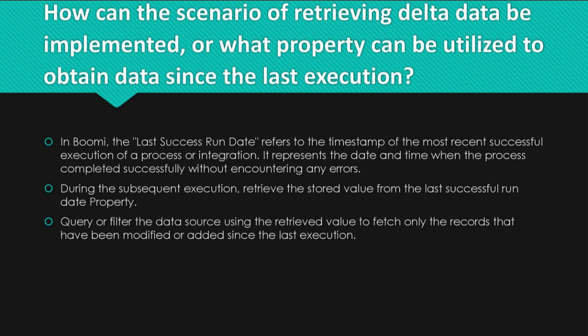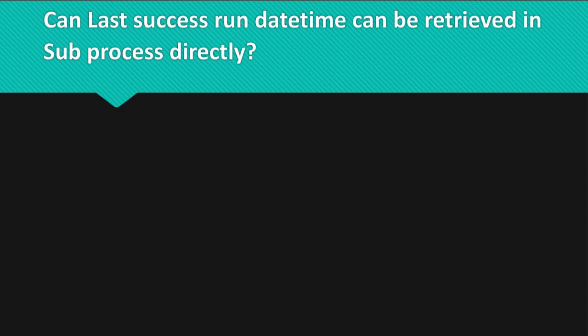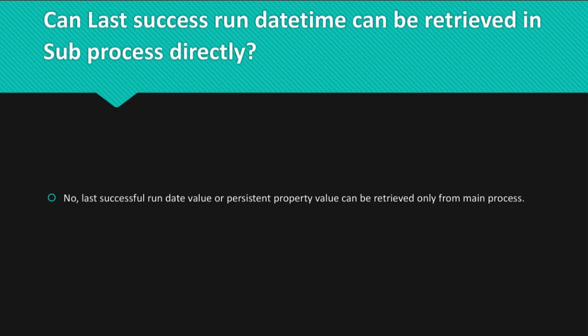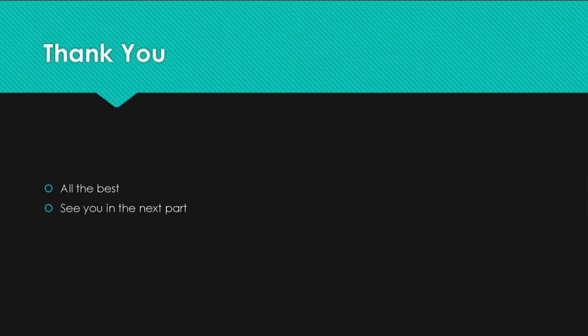Question: Can the last success run date-time be retrieved in a sub-process directly? Answer: No, the last successful run date value or persistent property value can be retrieved only from the main process.